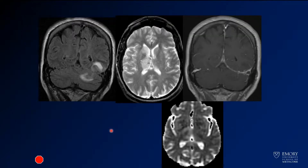Going on to an MR, what you see is there's edema, and interestingly it's crossing the tentorium. So you have some edema here in the left cerebellar hemisphere as well as the left inferior parietal and occipital lobes. It also looks like there's some abnormality in the right thalamus there.